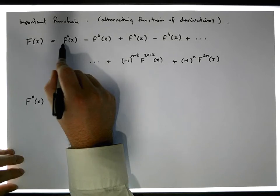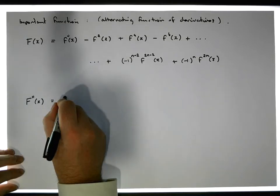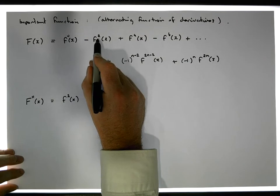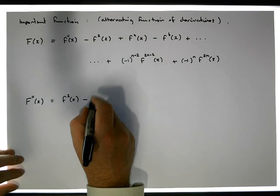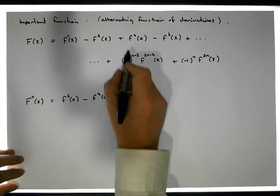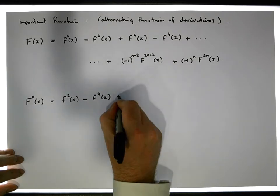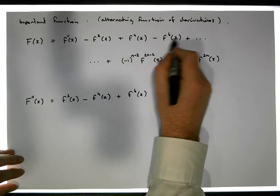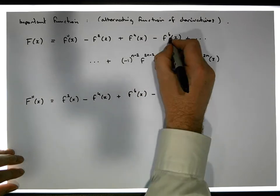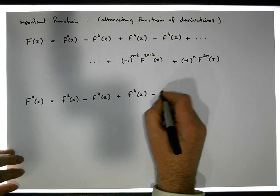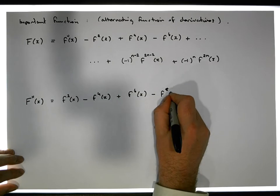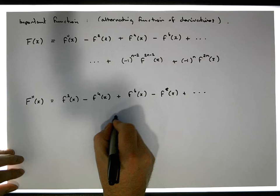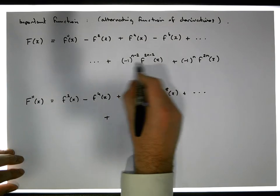This gets differentiated twice so this becomes f₂ of x. This gets differentiated another two times so it becomes minus the fourth derivative of x. This gets differentiated another two times so it's plus f, the sixth derivative of x. Differentiating another two times gives the eighth derivative of x, and so on for each term.